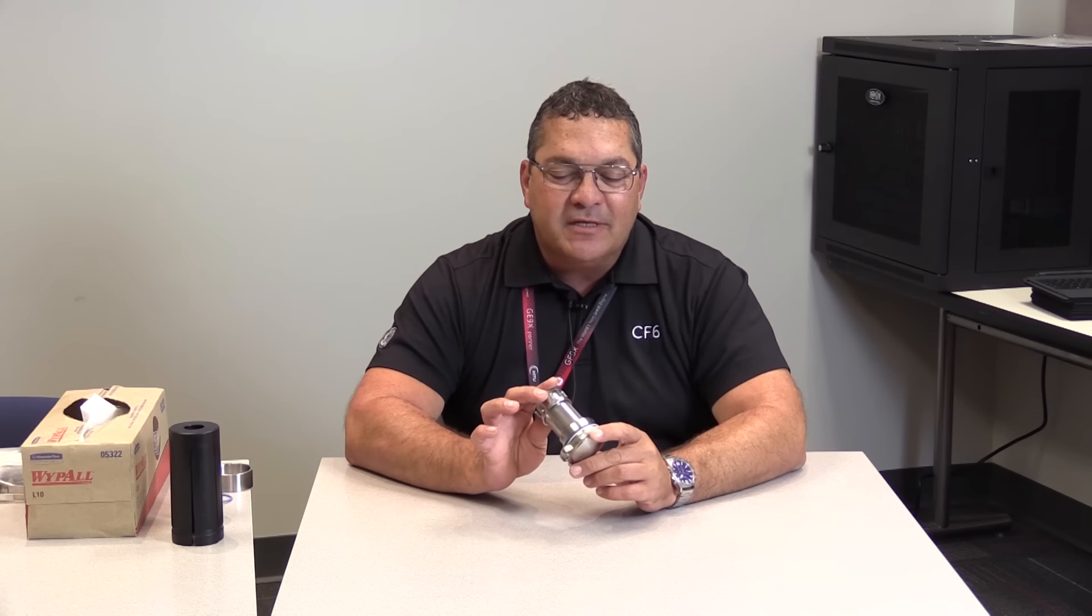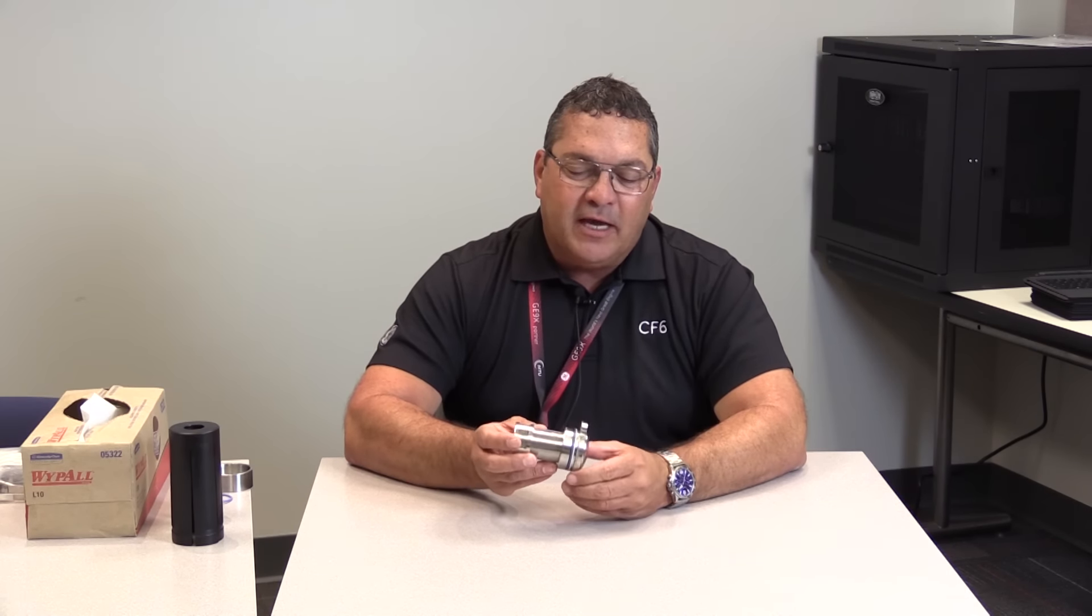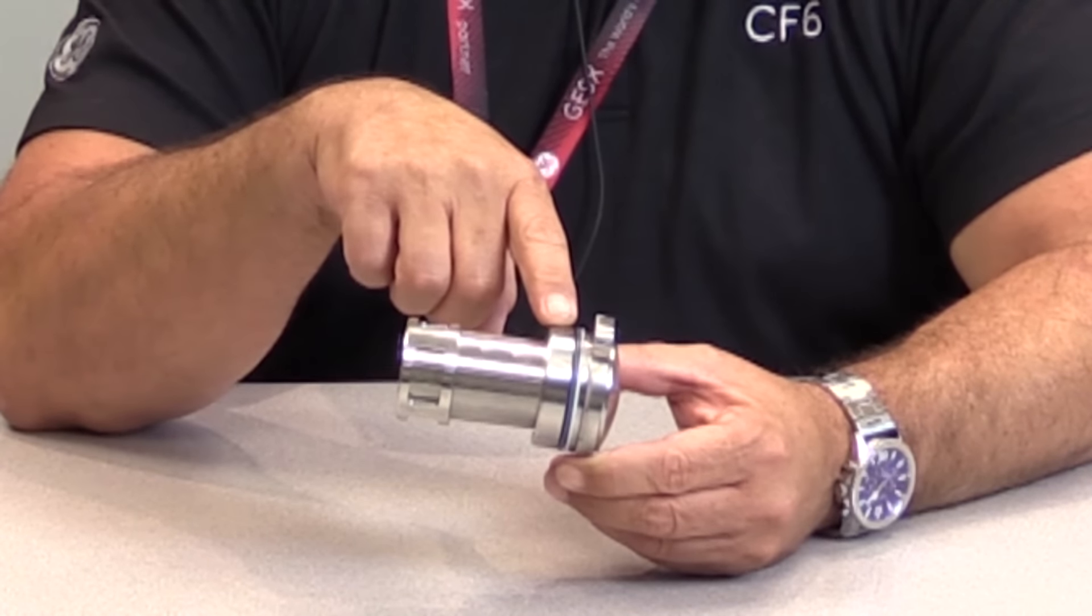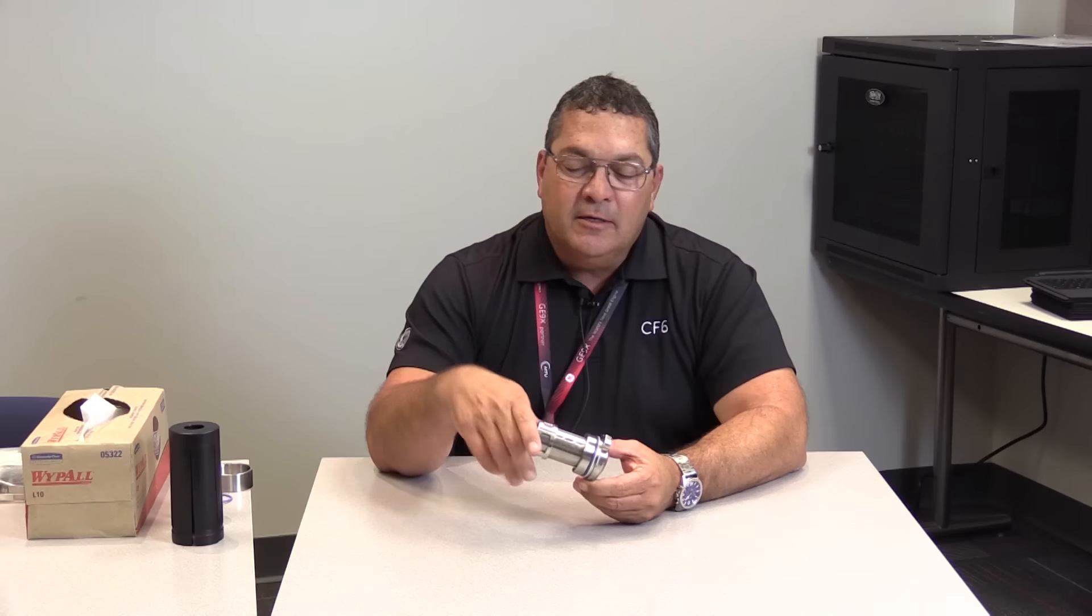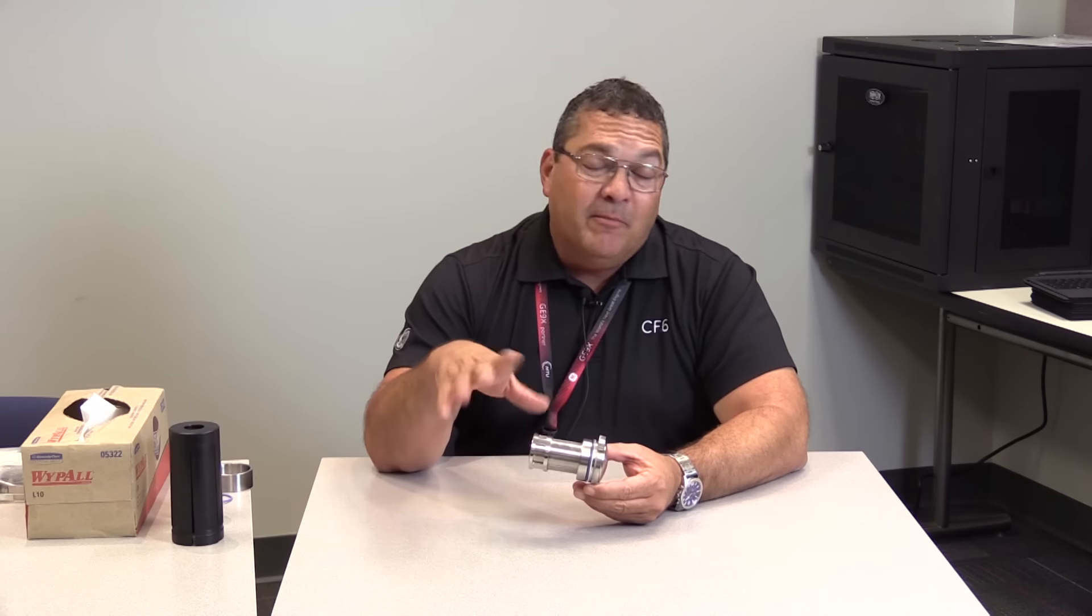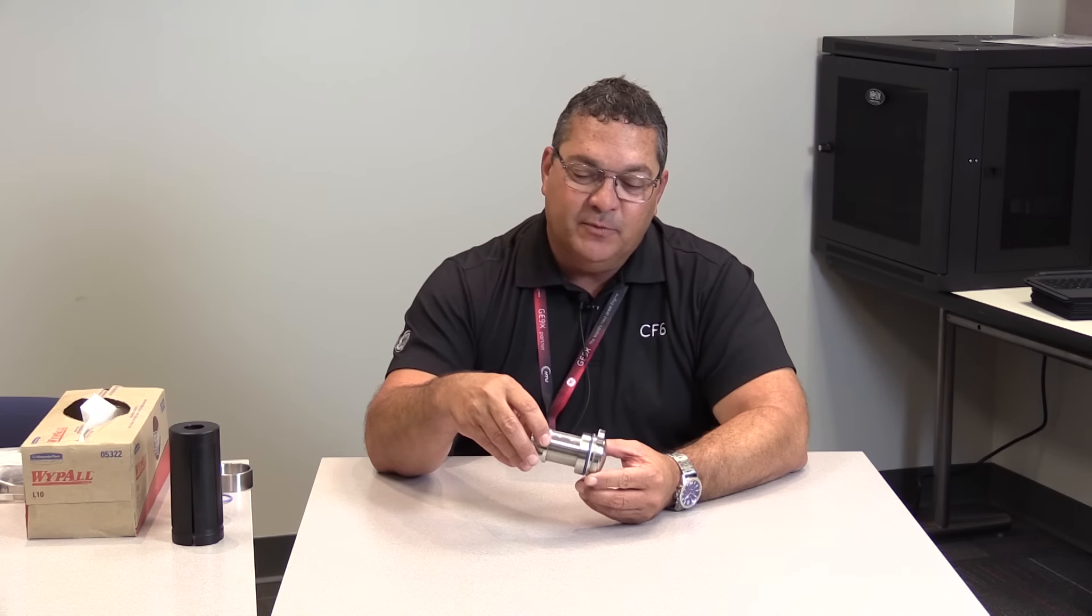The strainer design has changed a little bit recently, and what we're going to look at specifically is proper installation of the packings, the O-ring and the backup ring associated with the strainer. Now, there are two methods by which we can install these packings. I'm going to call them a preferred method and then an alternate method, and I'll show you both of those methods as we go.